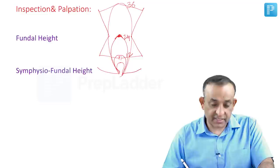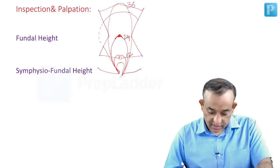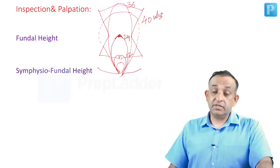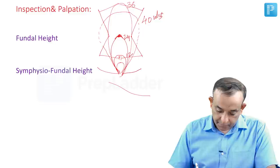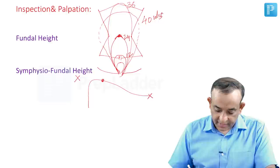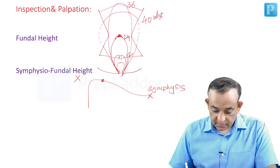The uterus reaches the xiphisternum at 36 weeks, then at 40 weeks it begins to fill the flanks and descends slightly. The symphysio-fundal height is measured from the symphysis pubis to the fundus. In a lateral view, the xiphisternum, umbilicus, and symphysis pubis serve as key landmarks for estimating gestational age clinically.